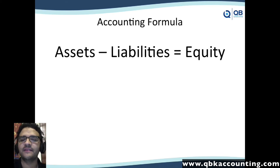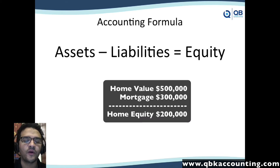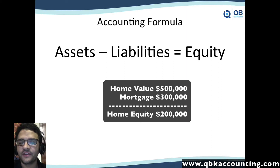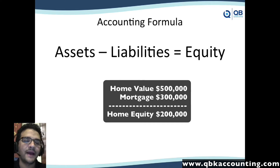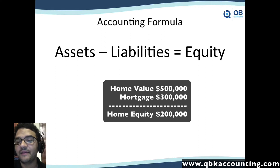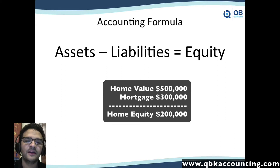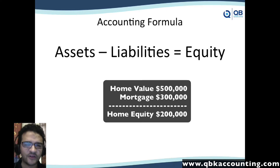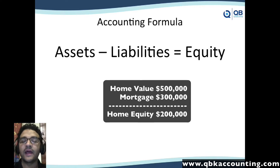The easiest way to explain: I own a house worth half a million dollars — that is my asset. I owe the mortgage, $300,000 — that's my liability. $500,000 minus my $300,000 liability equals my equity, $200,000, which is what I can go and get a home equity loan against. If you understand the concept of a home equity loan, it's basically the difference between what I owe and the value of the house.